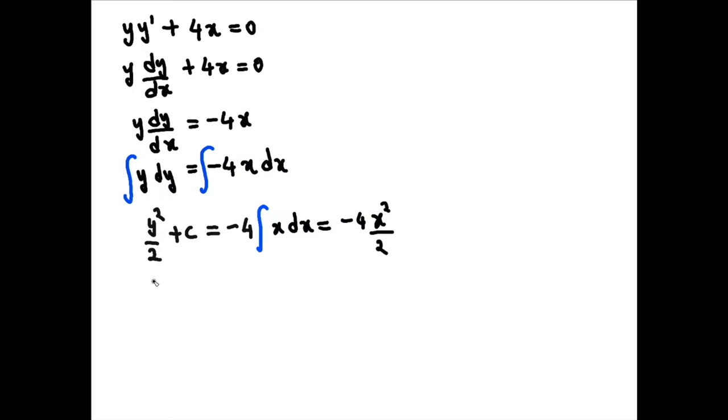So y squared over 2 plus c equals minus 2x squared. We just cancel these two out.